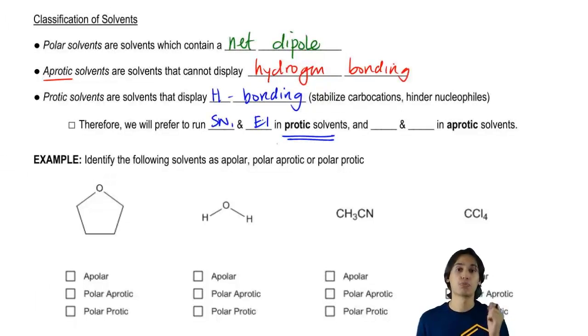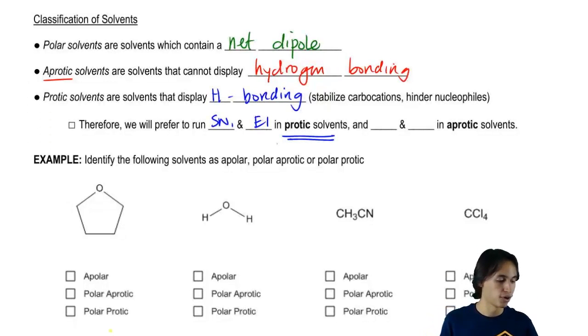Are you guys following the logic there? Because protic solvents are going to be able to stabilize the carbocation, as I said before, up here.